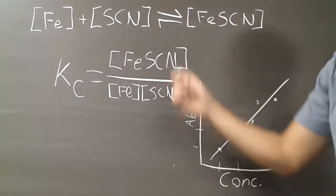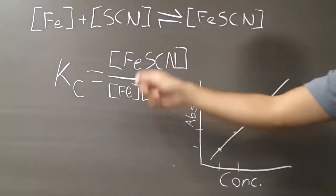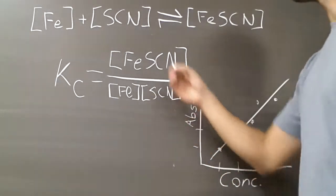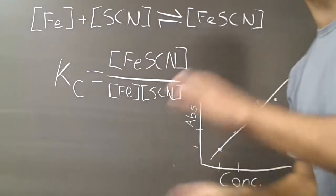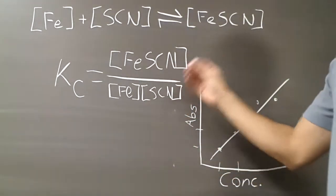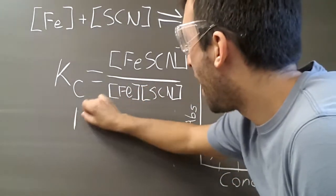Now, we're going to have to use an ICE table to solve for this, because as we lose some of this, we're going to be forming some of this, so it's not an easy-to-solve problem. You'll need to do an ICE table.